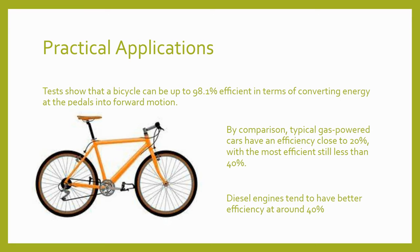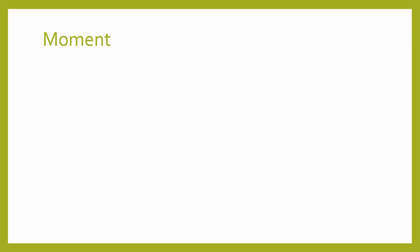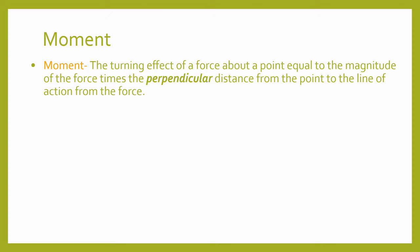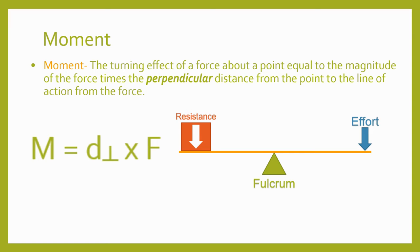As we explore simple machines and the principles that make them work, it's worth taking some time to talk about moments. A moment is the turning effect of a force about a point, equal to the magnitude of the force times the perpendicular distance from the point to the line of action of the force. So when a force causes an object to want to pivot around a fixed point, we call this a moment, and the magnitude of the moment equals the force multiplied by the perpendicular distance between the force and the pivot point.